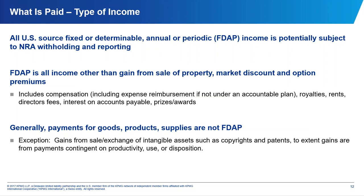What exactly are we looking at in these payments? FDAP income — fixed or determinable annual or periodical income — is really all U.S. source income you're paying, other than gain from the sale of property, market discount, or option premium. There is one exception: if you sell an IP right and the sales price is contingent on future use, each payment will be treated as a royalty. Normally, payments for goods, products, and supplies are not included. But you would be looking for services and royalties — software acquisitions, for instance, if treated as a service or royalty, would be captured. You need to determine the source to know whether these rules apply.